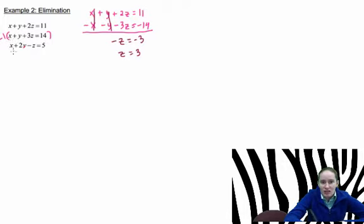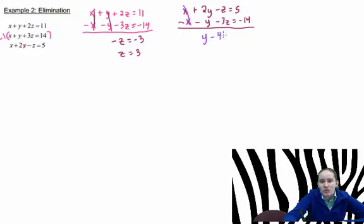So I can actually do the last equation, x plus 2y minus z equals 5, with, again, negative one times the middle equation. So negative x minus y minus 3z equals negative 14. And now add the equations together, and let's eliminate. So that gives us y minus 4z equals negative 9.